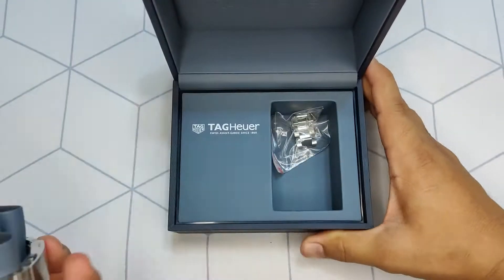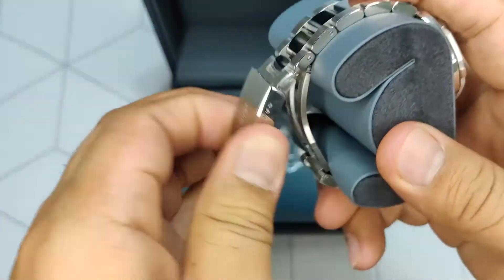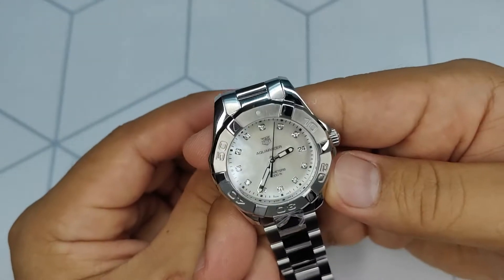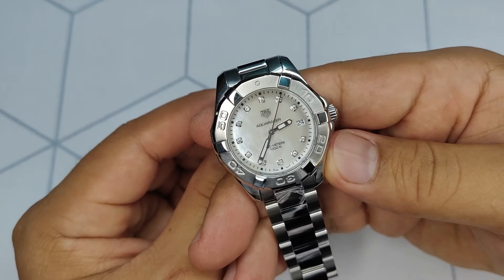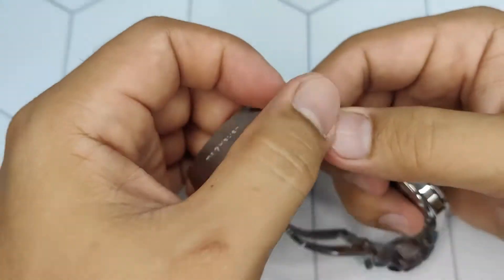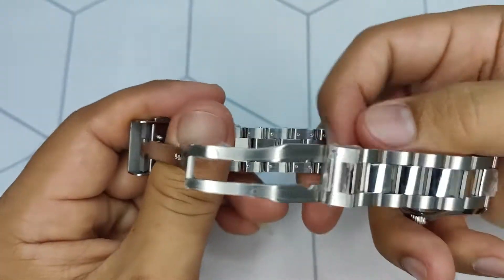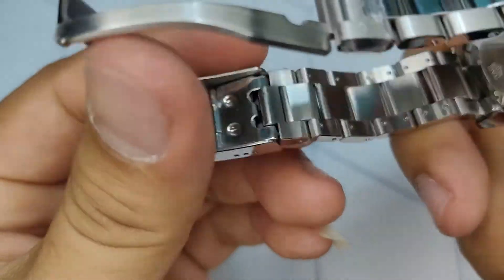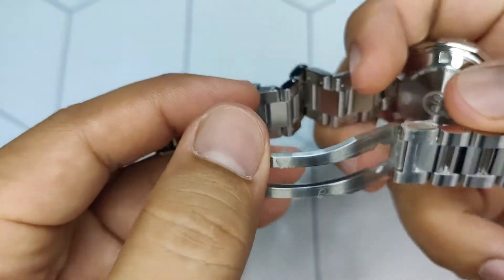In this video, I will be adjusting a Tag Heuer lady's watch. And now we will check the bracelet first. As you can see, there are no arrows, which means that we can remove the pins either way.